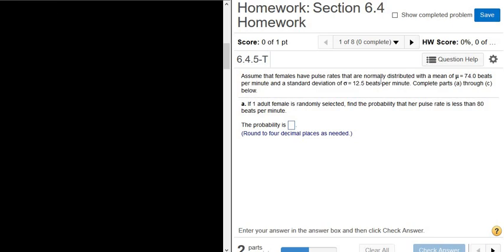Assume that females have pulse rates that are normally distributed with a mean of 74 beats per minute, so that's our mu, mu is the mean, and a standard deviation of sigma equals 12.5 beats per minute, so sigma is our standard deviation. Complete parts A through C below.